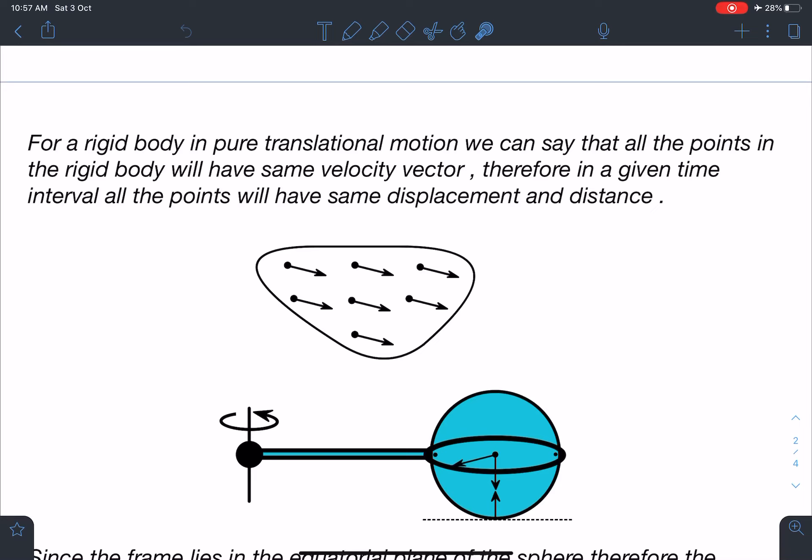Therefore in a given time interval all the points will have same displacement and distance. Since any two arbitrary points if you join by a line and that line doesn't rotate.